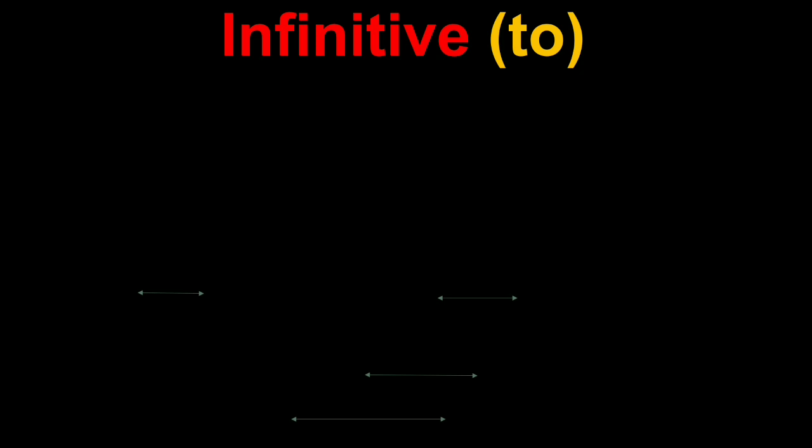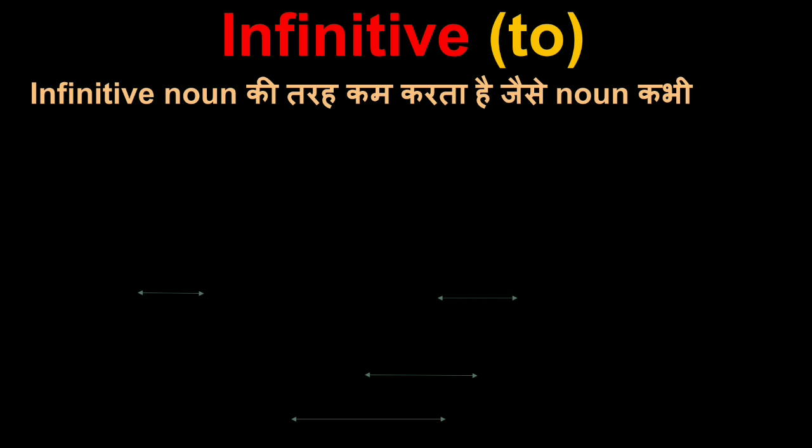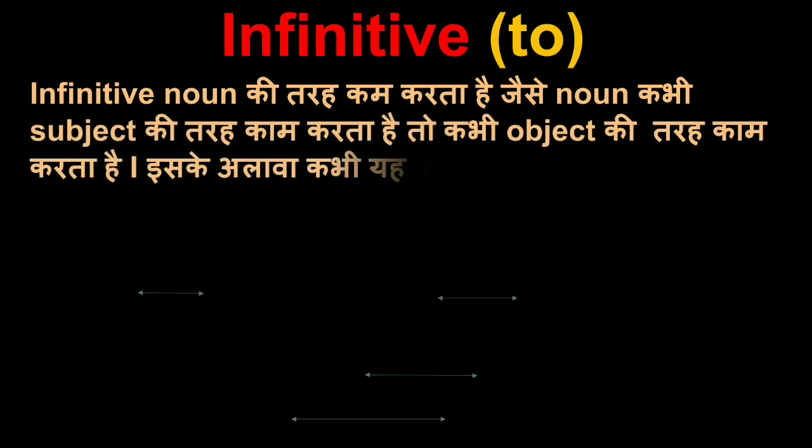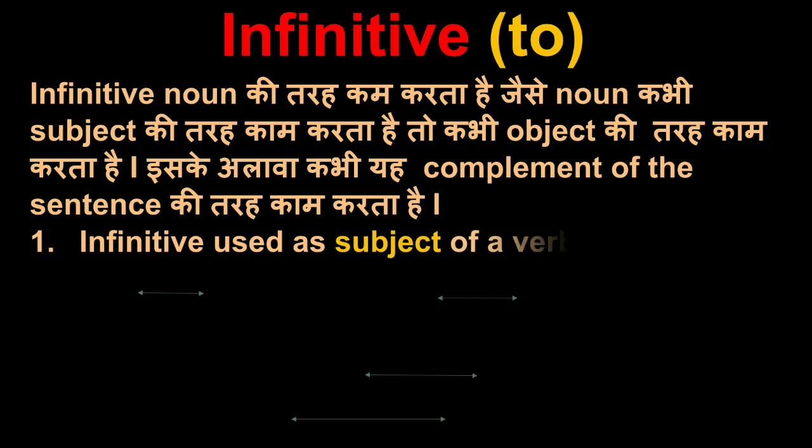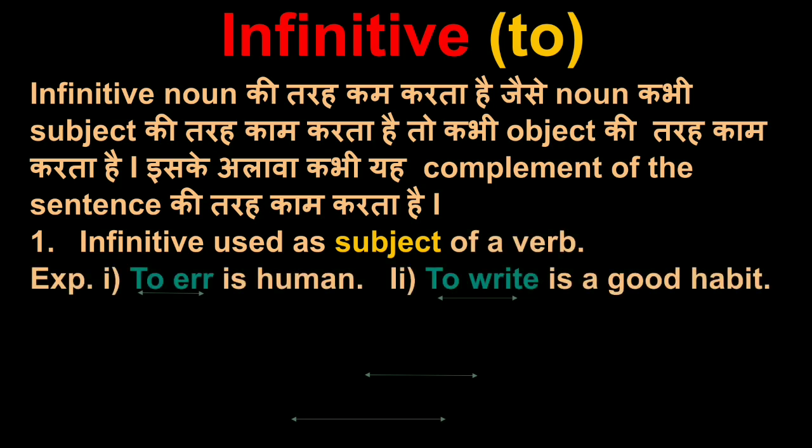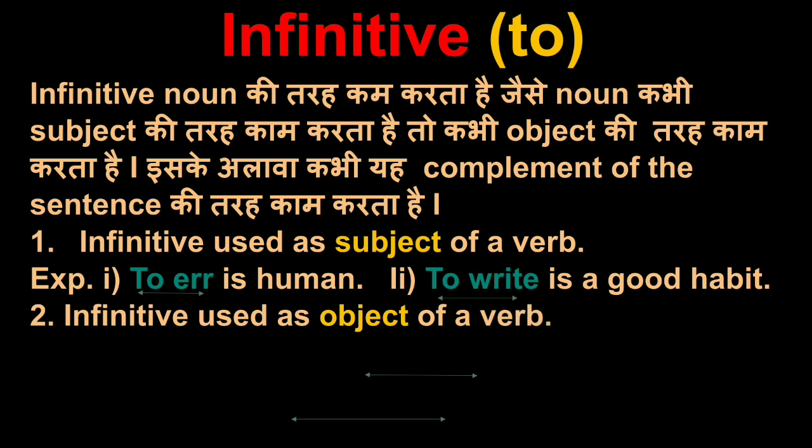First we will discuss about infinitive. Infinitive works like a noun. Just as noun sometimes works as subject, sometimes as object, and sometimes as complement of the sentence. First, infinitive used as subject of the verb. For example: 'To err is human' and 'To write is a good habit.' To err is subject and it is infinitive. To write is subject and it is infinitive.